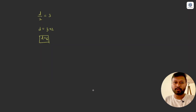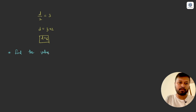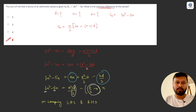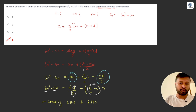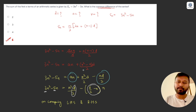I suggest you try finding the value of 'a' yourself and let me know in the comments what answer you got. That's all for this video — I hope you understood it well. Do check out our general aptitude course to solve more questions and prepare well for the CSIR NET exam. Thank you so much for watching, see you in the next one — take care, bye!